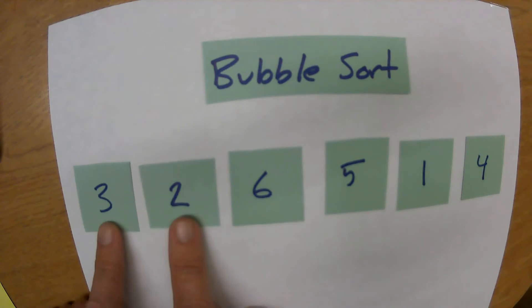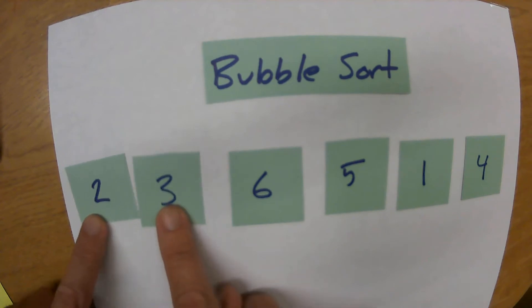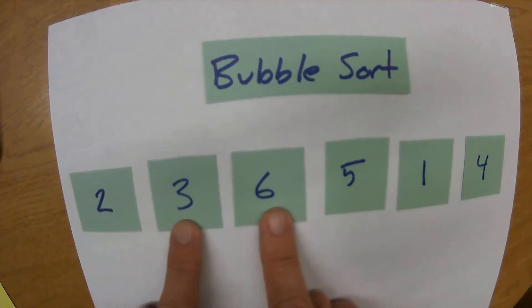The way this works is we just go through the list comparing adjacent elements and swapping them if necessary. So we look at these two elements and they are in the incorrect order relative to each other, so I swap them. I go to the next two and these are correct so I don't do anything.